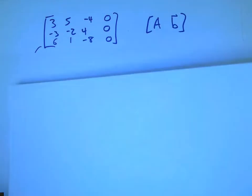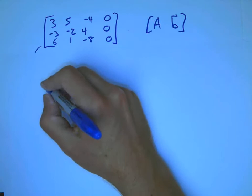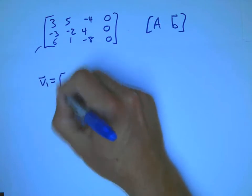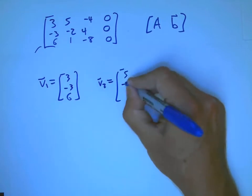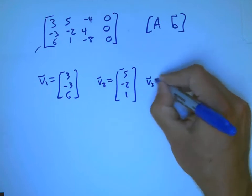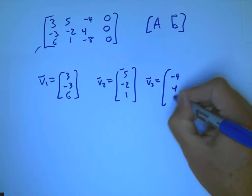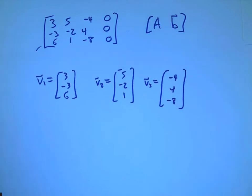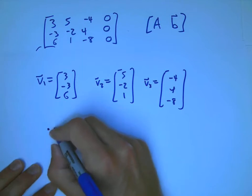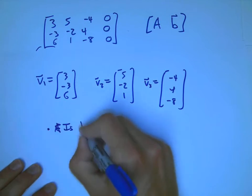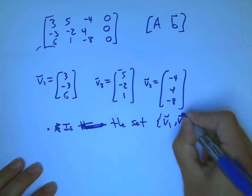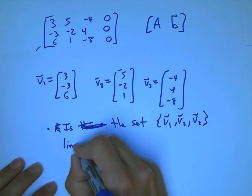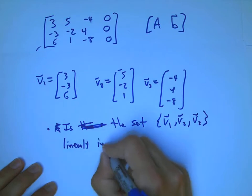but one of them would be if we had this question. If V1 was 3, minus 3, 6, V2 was 5, minus 2, 1, and V3 was minus 4, 4, minus 8. And there's lots of questions we could ask about that, and so one of them is, is this set, the set V1, V2, V3, linearly independent or not?